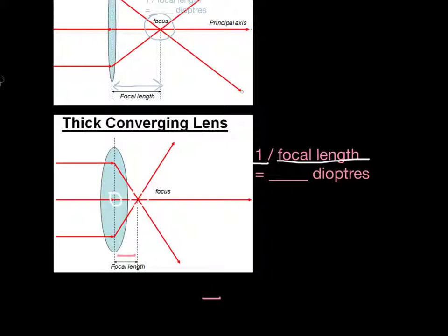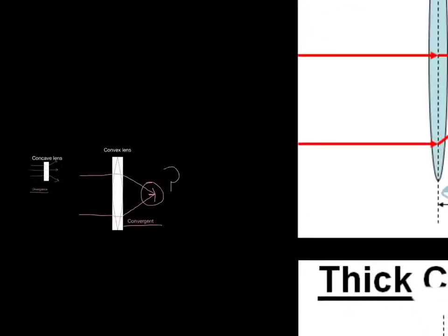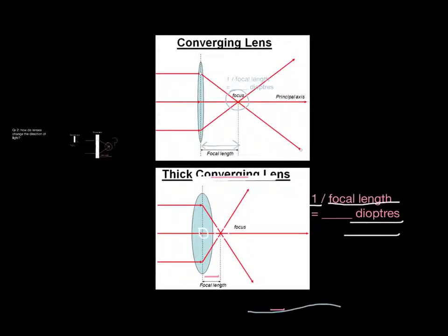Your answer is given in diopters — this strange word that are the units. So in summary, we've looked at how light goes through concave lenses, convex lenses, and how the thickness of a lens affects its ability to focus light, and also how to work out the strength of focus. Now it's your turn. Have a go at your worksheet for QR2. Use the help sheet only if you really need it, and have your calculator ready, because you may be asked to work out the strength of a converging lens. Good luck.